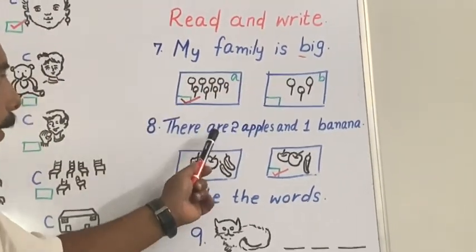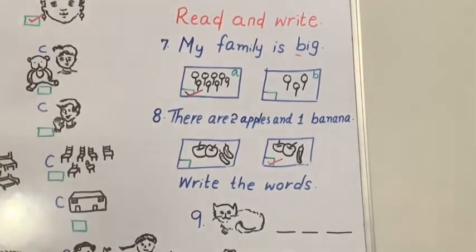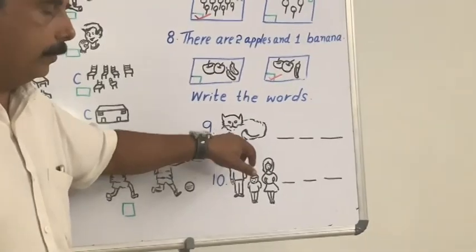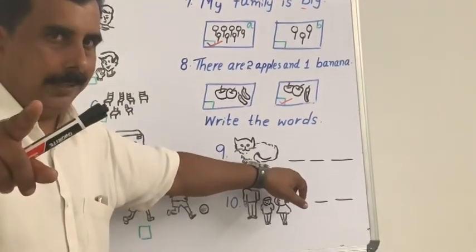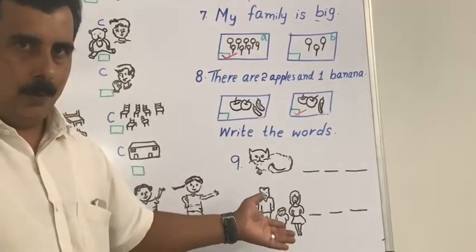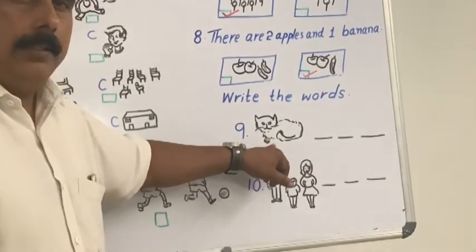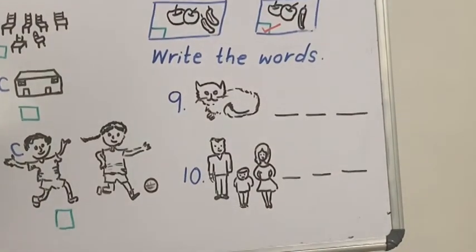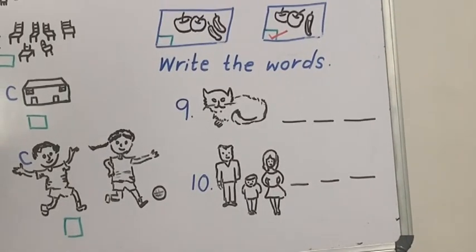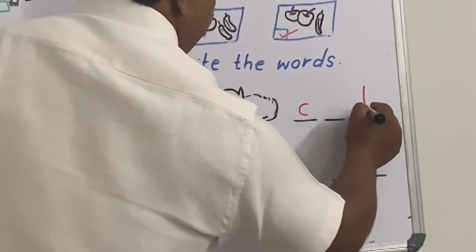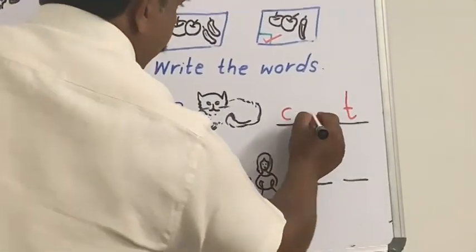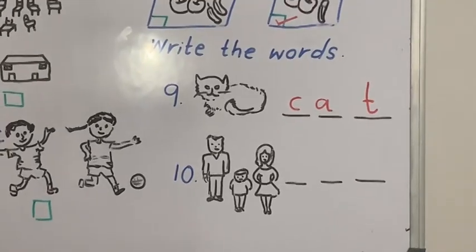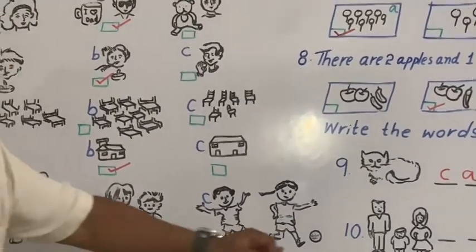Finally, write the words. Question number 9 — two pictures are given. Do you know what it is? Is it your pet? Yes — what do you call it? What's the name? You can call it by any name. We want to write the name of the animal. It starts with C, ends with T — what will be in the middle? Yes — A. So spell it: C-A-T. Read aloud: cat. Short A sound — you got the point.